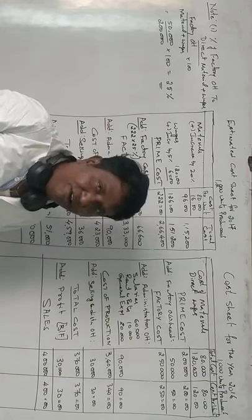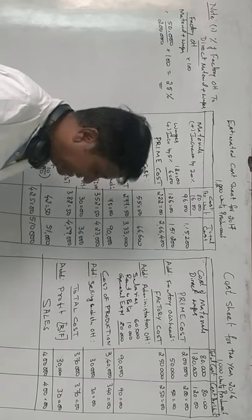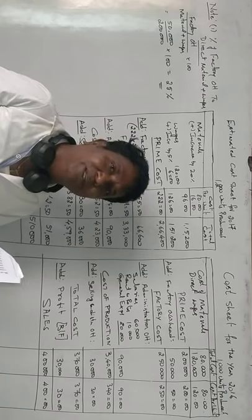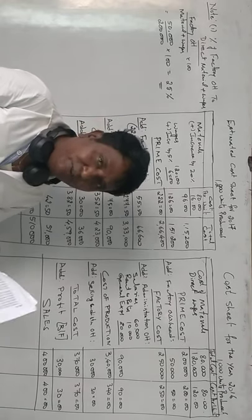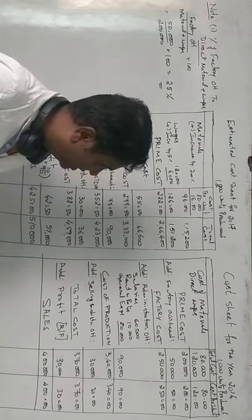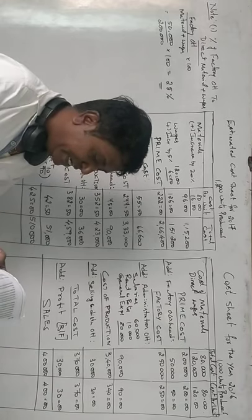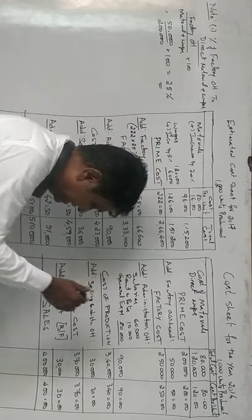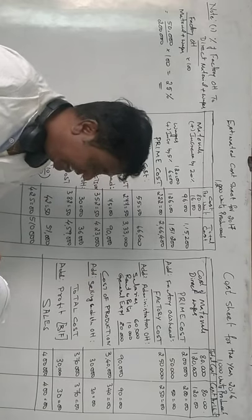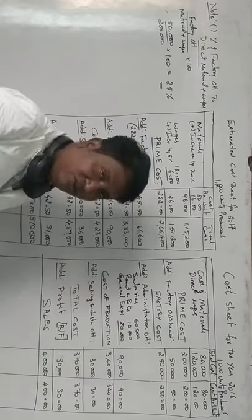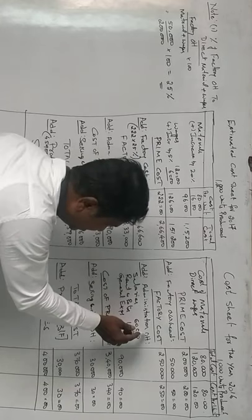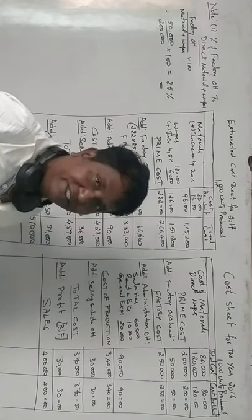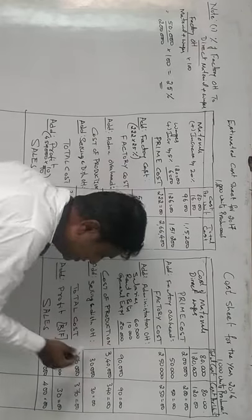Next is administration overheads. These are not given as a single figure but split into components: salaries of 60,000; rent, rates and insurance of 10,000; and general expenses of 20,000 rupees. So total administration overheads is 90,000 rupees to manufacture 1,000 machines, and for one machine it becomes 90 rupees.